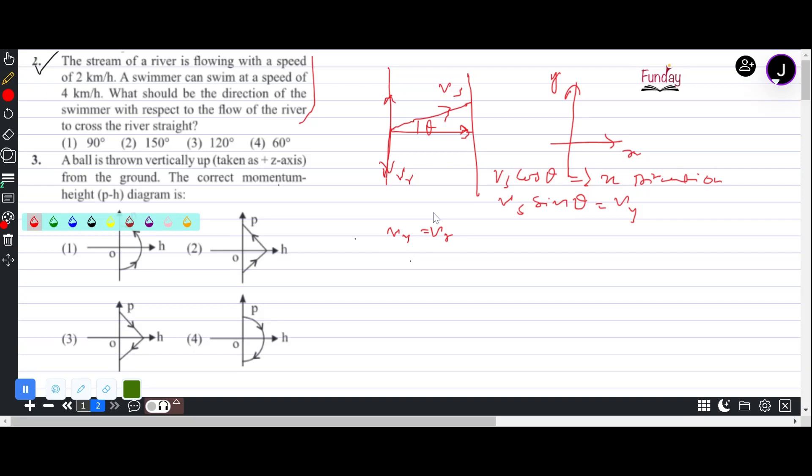So the vertical speed of swimmer is VS sin θ, that is equal to VR. Now we are given VS = 4 and VR = 2, so 4 sin θ = 2, so sin θ = sin 30°. 30 degrees, sin 30 is 1 by 2.